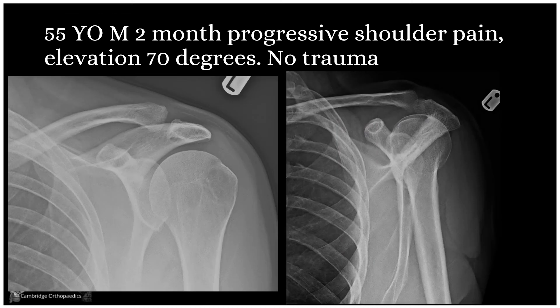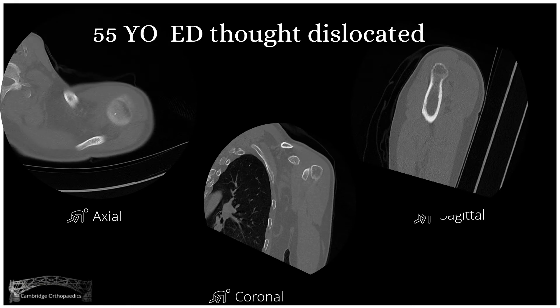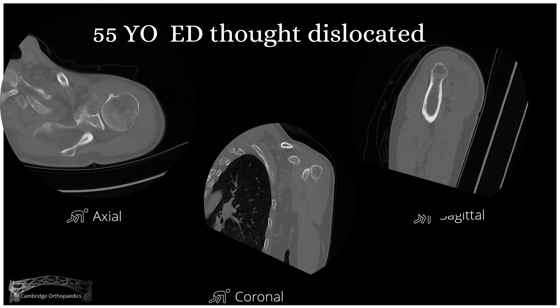A 55-year-old male presents with a two-month history of progressive shoulder pain and difficulty with elevation above 70 degrees. On further questioning, his symptoms began four to five months ago. The AP and lateral scapular view x-ray appears normal. Due to deformity and lack of elevation, he gets a CT as the team is thinking it may be dislocated.